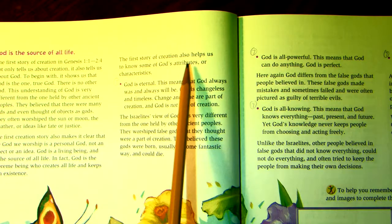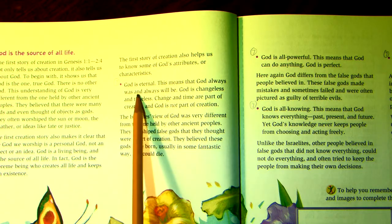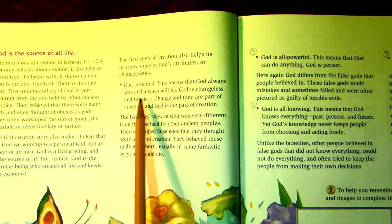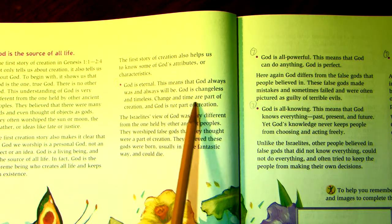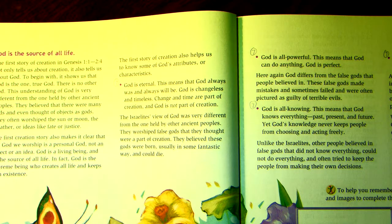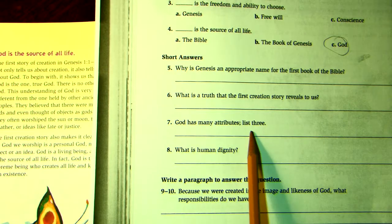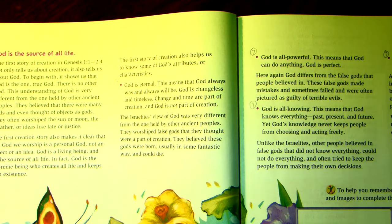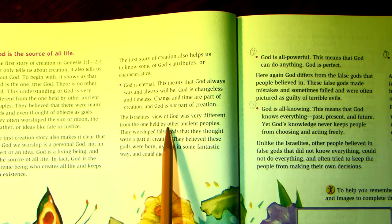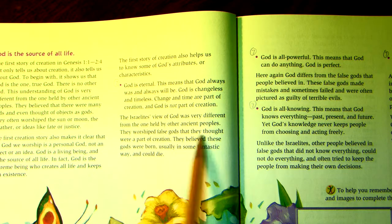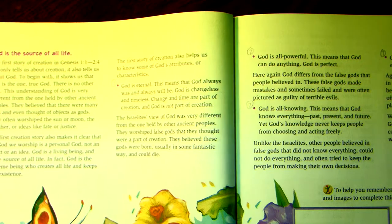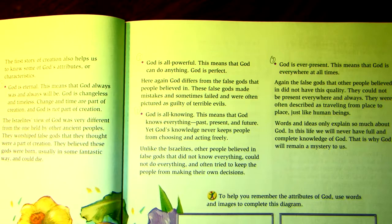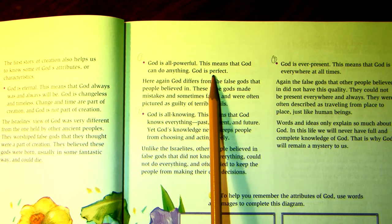The first story of creation helps us know some of God's attributes or characteristics. God is eternal — this means God always was and always will be; God is changeless and timeless. Change and time are part of creation, and God is not part of creation. For question seven, which asks you to list three attributes, one of them is that God is eternal. The Israelites' view of God was very different from other ancient peoples, who worshiped false gods that they thought were part of creation — gods they believed were born in fantastic ways and could die. God is all-powerful, meaning God can do anything. God is perfect. That is another attribute for question seven.